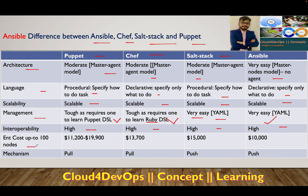For enterprise cost up to 100 nodes — these are approximate figures — Puppet ranges from $11,000 to $19,000, Chef is $13,000 plus, SaltStack is $15,000, and Ansible is $10,000 for 100 nodes. These are open-source tools and we haven't purchased any enterprise license in this series, but enterprise licenses do exist for all four players.